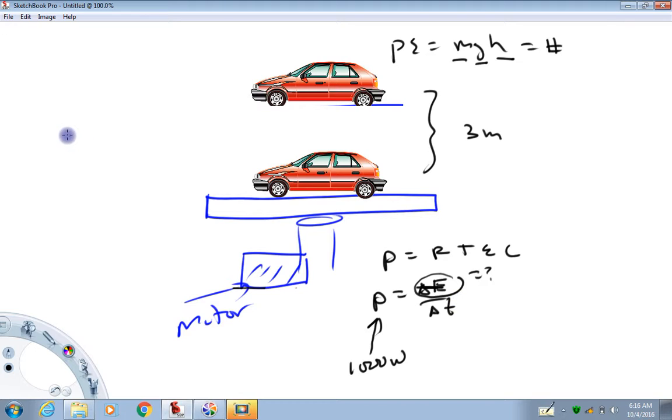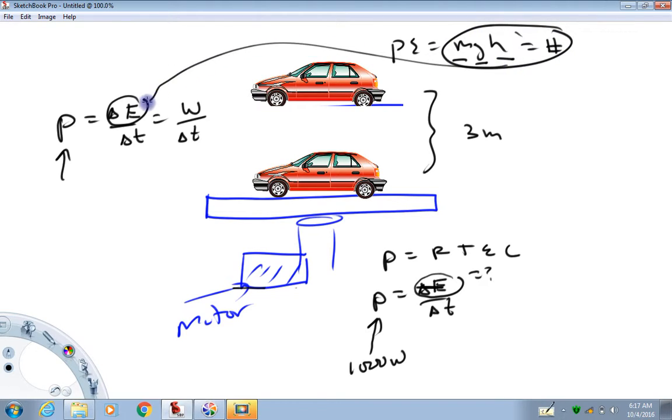The mass is given. G is 9.8 meter per second squared. The height is given. This is going to be some number, and it's going to be a large number, and that's okay. So now, once we have that number, power is change in energy over change in time. If you read the book, the book will say power is work over time, and that's fine because the change in energy and the work are the same. I'm just going to keep using this: power is change in energy over change in time.